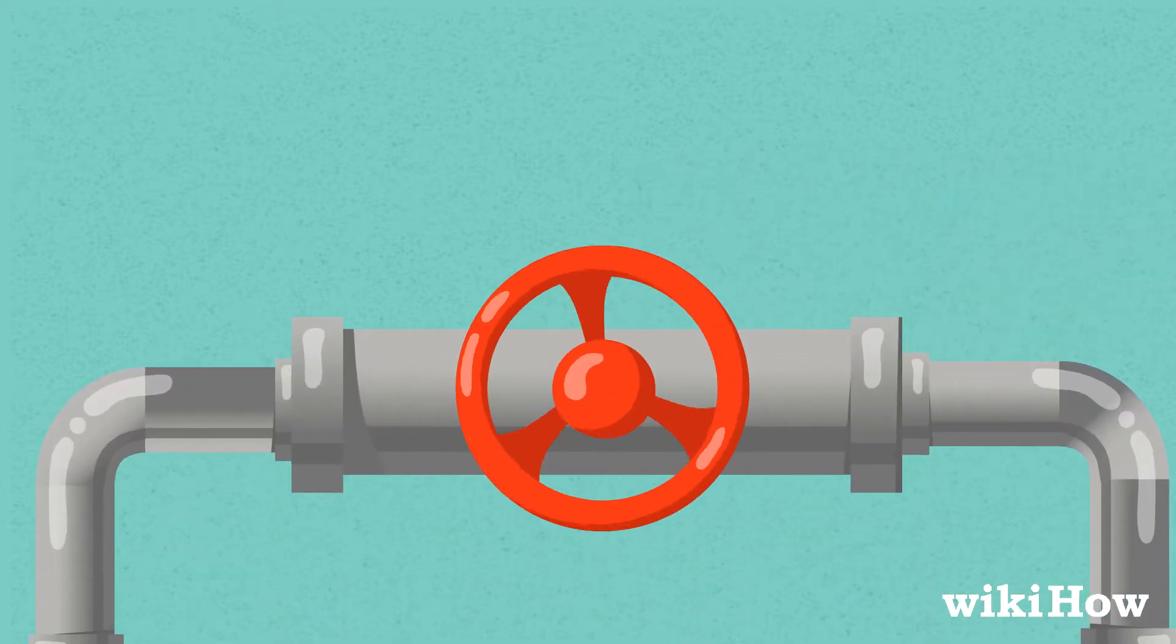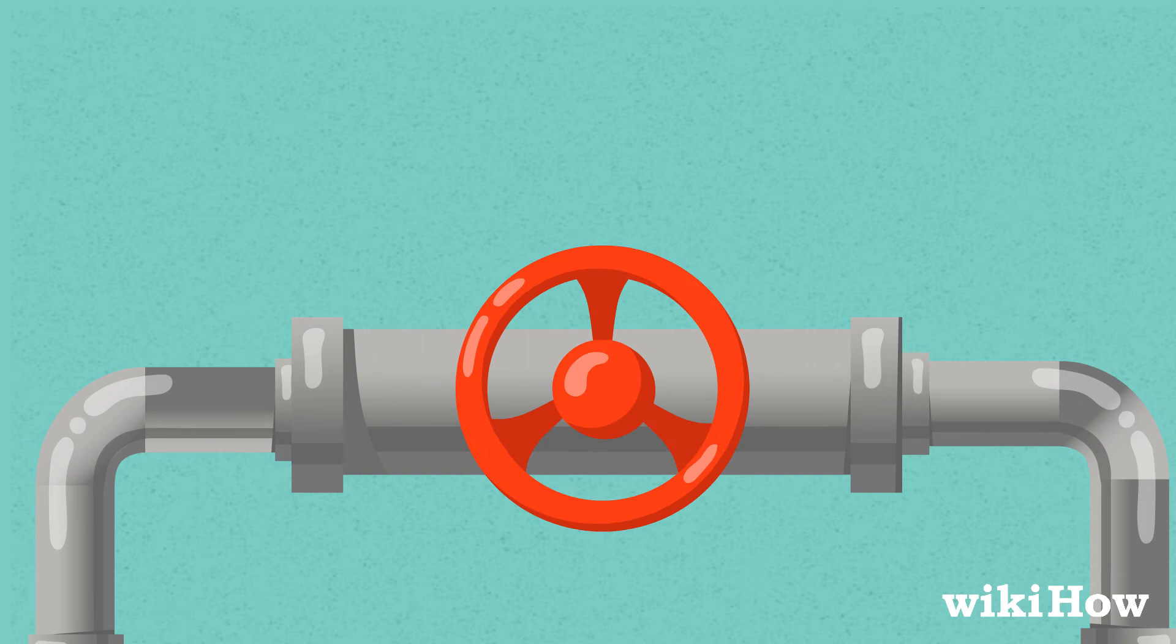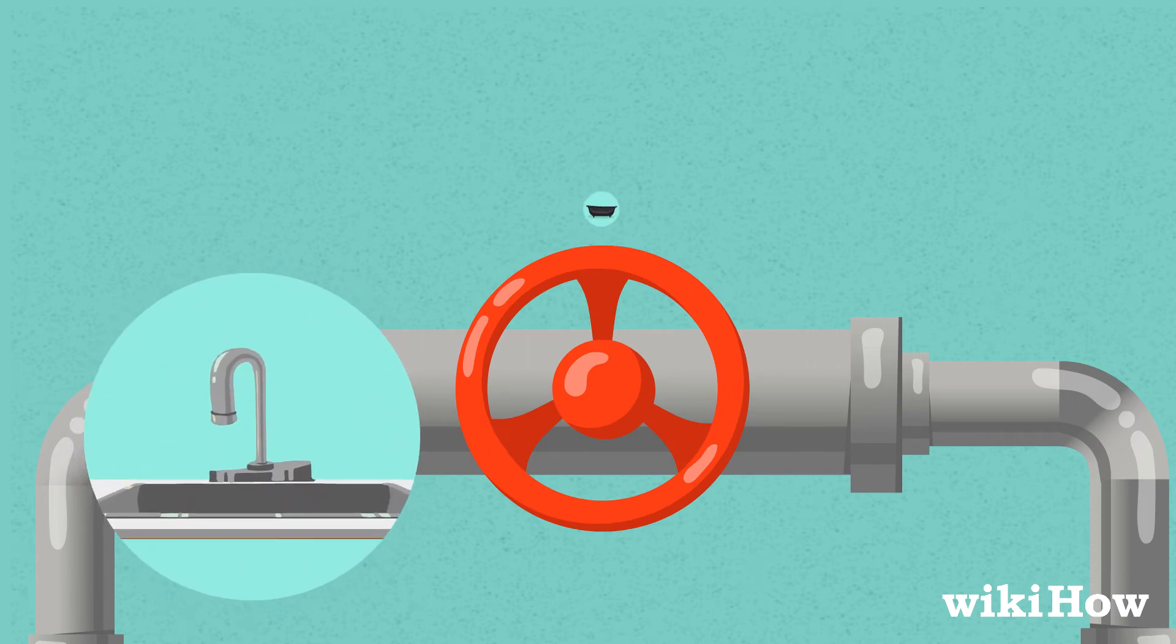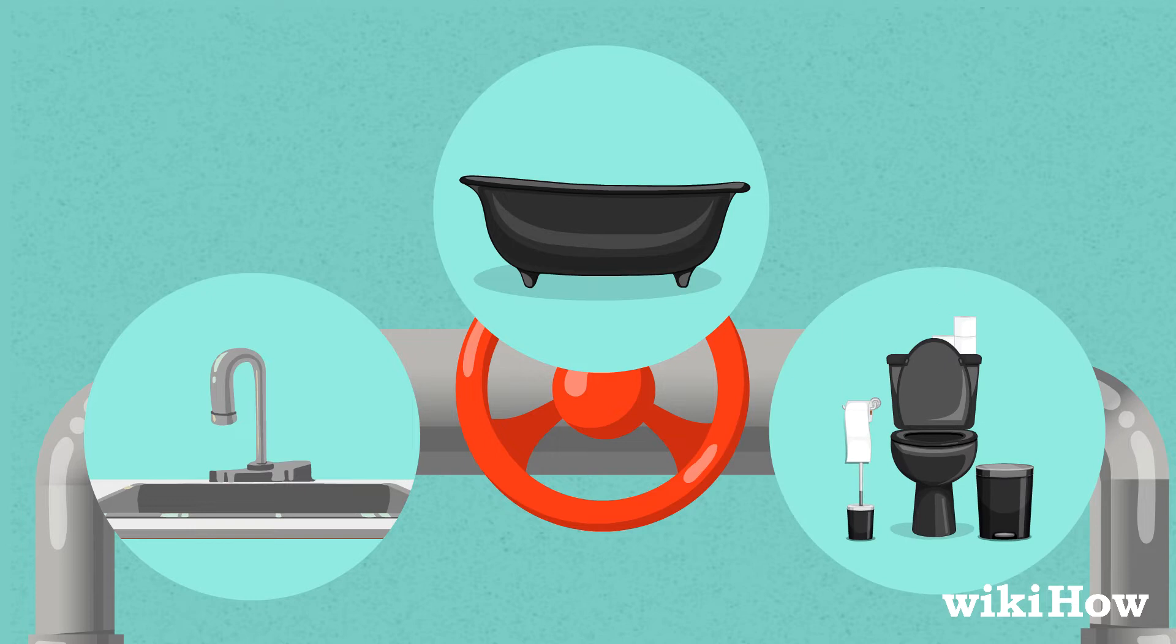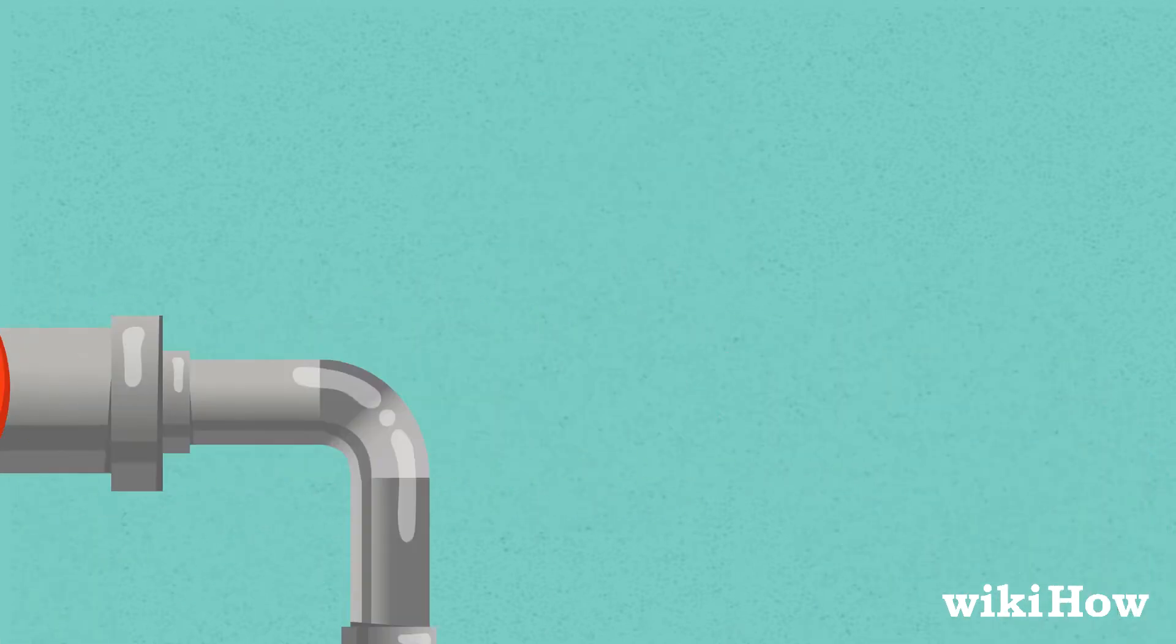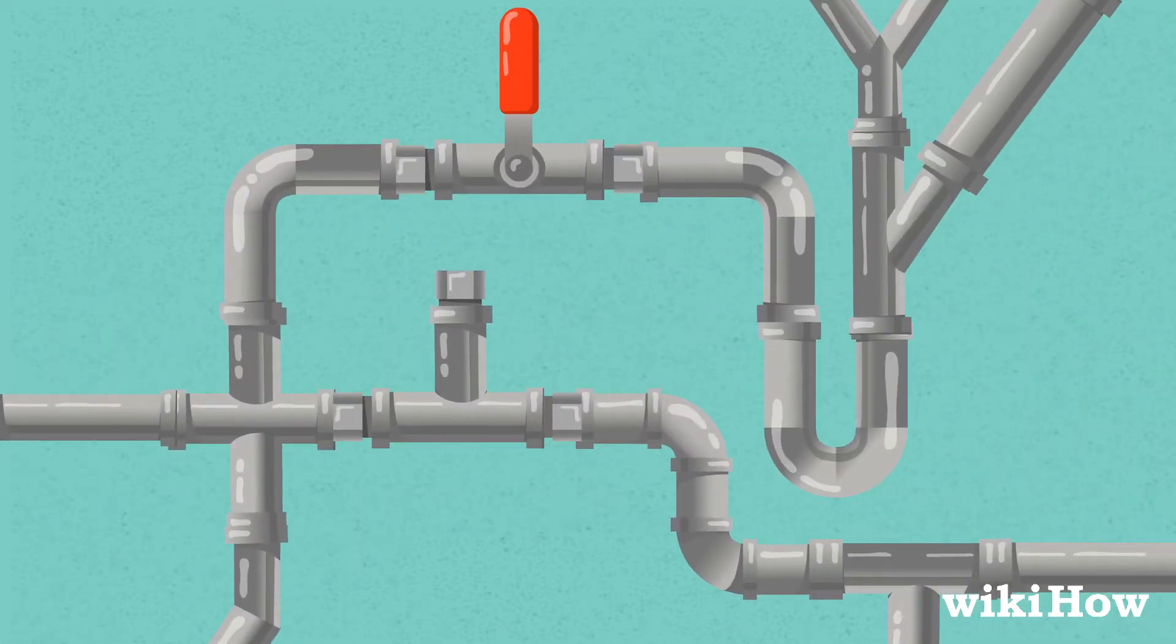Sometimes it's necessary to shut off a water supply valve for a specific plumbing fixture, like a sink, tub, or toilet. To turn the water to the appliance back on, look for a valve attached to a nearby pipe.